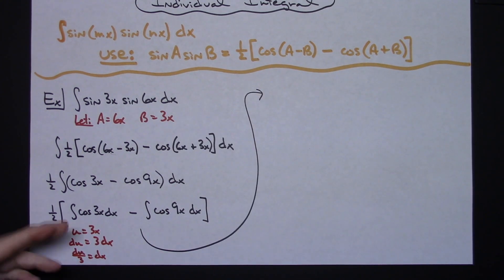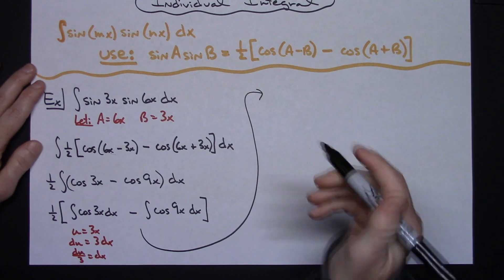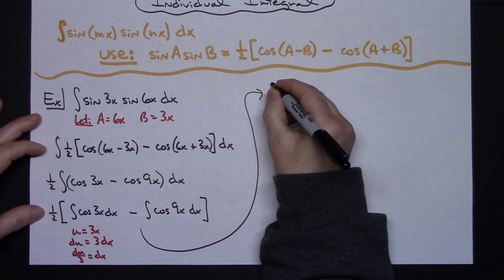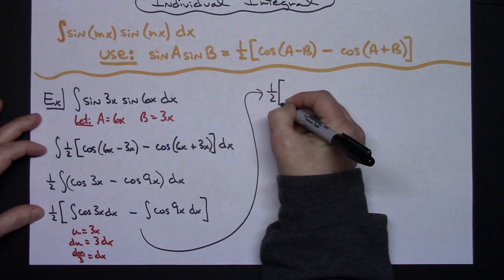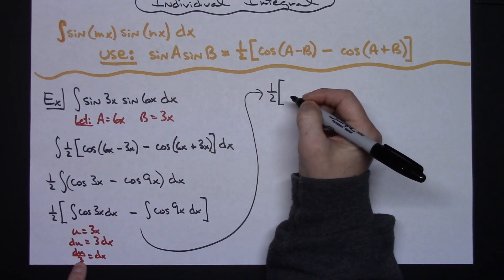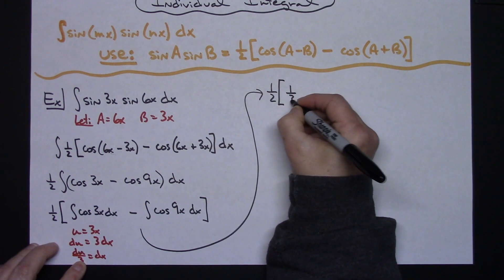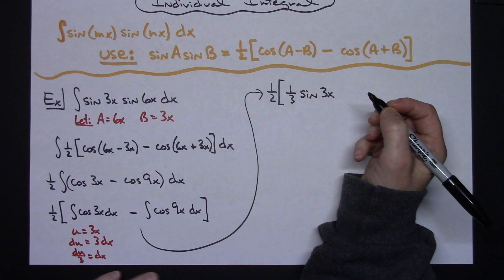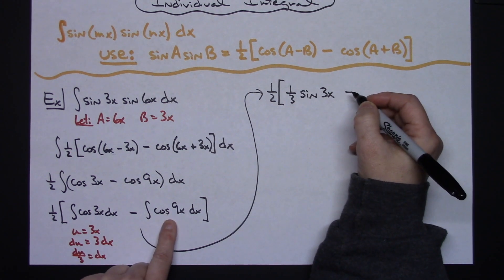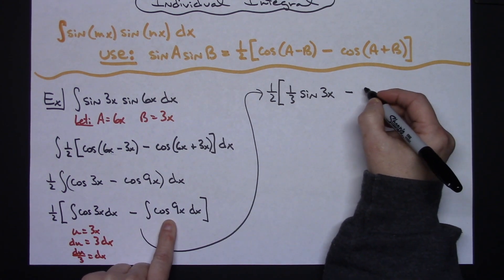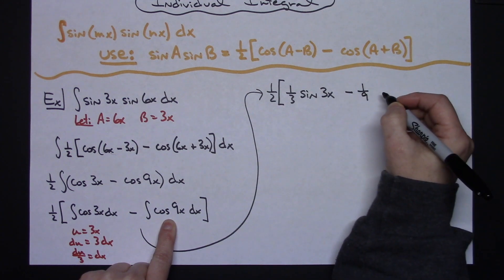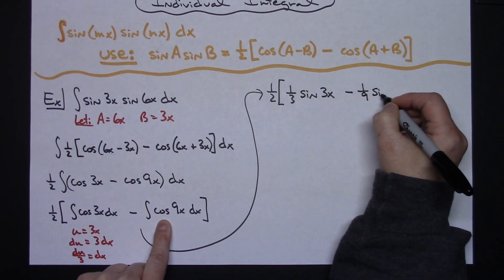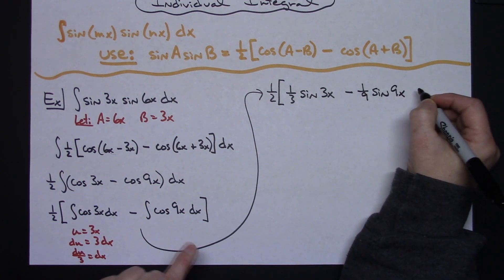Because if you're at this point working this type of integral out, then this type of integration should be relatively simple. So we'll have a one half here, times, pulling out that one third. I'll have a one third, the integral of cosine is sine, and then keeping that inside right there. Now looking at this one, I will be pulling out a one ninth, and the integral of cosine again is sine, and leaving that inside function alone.